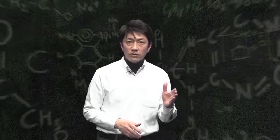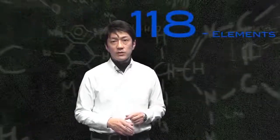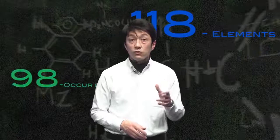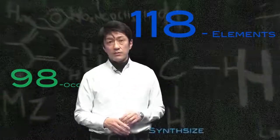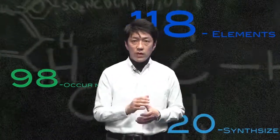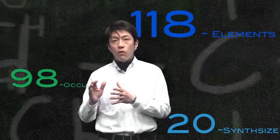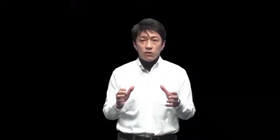There are 118 known elements: 98 occur naturally, and 20 have been synthesized. In this course, you don't have to use the symbols for all these elements. We will focus on only four basic elements.